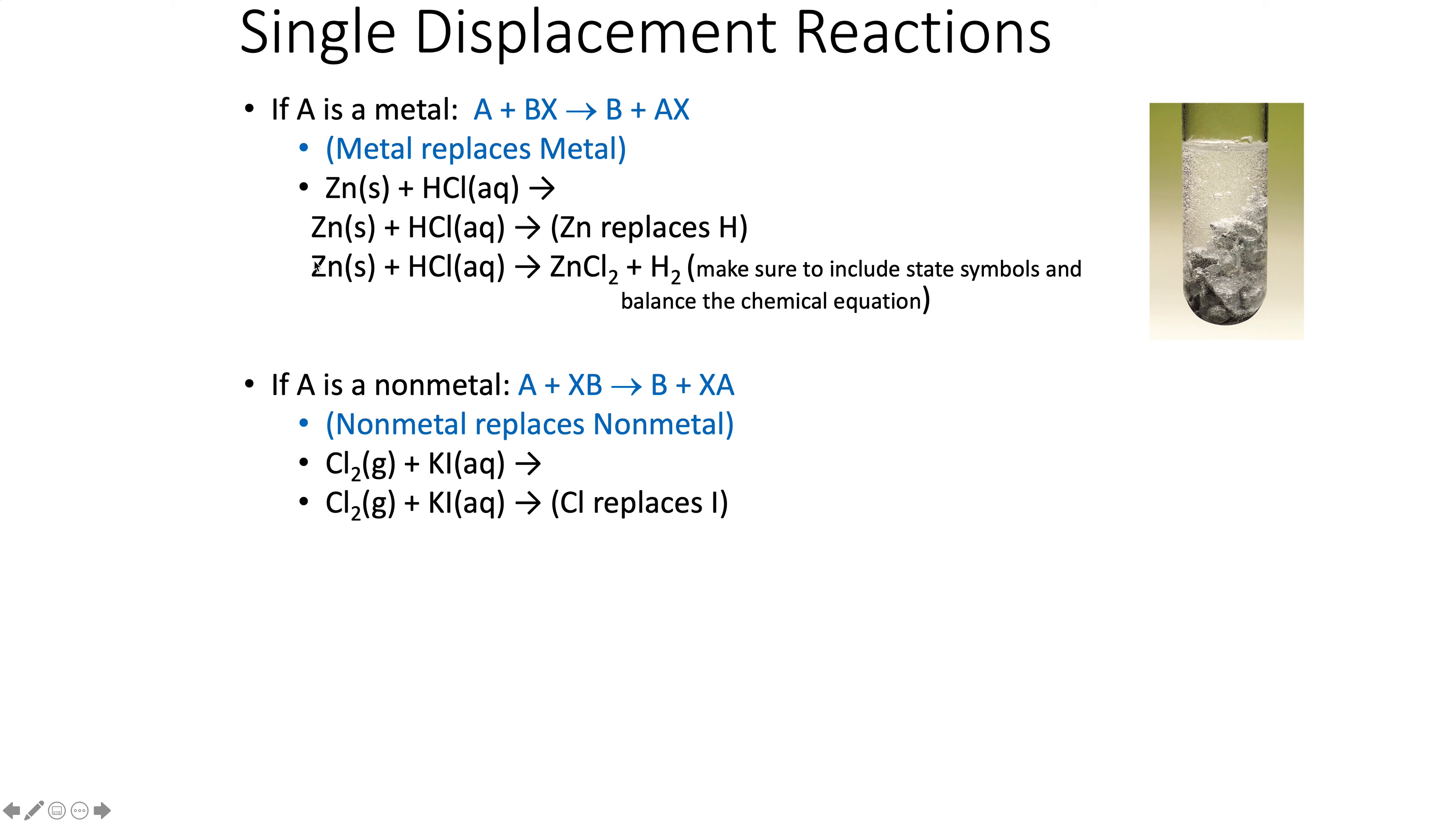The zinc will knock the hydrogen off. Remember hydrogen is H2. When zinc is with chlorine, chlorine is negative one, zinc is plus two, so they're going to combine in the appropriate ratios, and then fix it by balancing. If you click on next, you'll see the balanced equation.